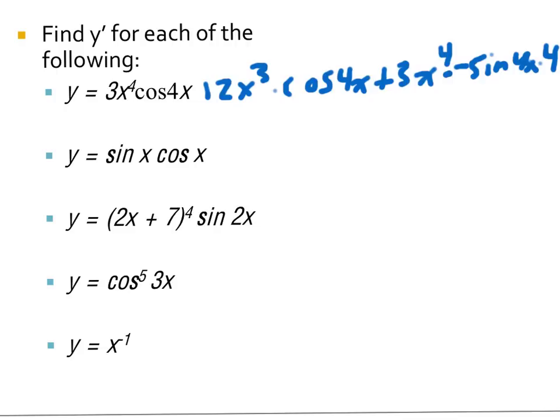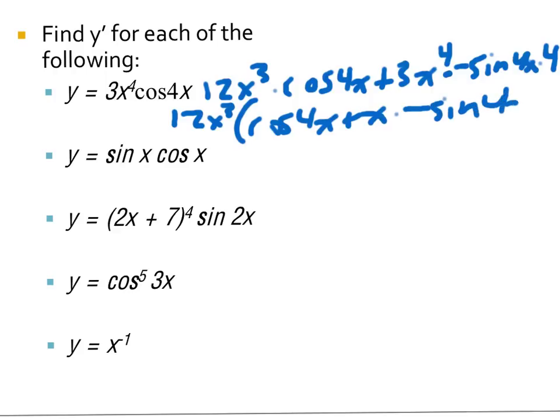I can look for the greatest common factor here. I can actually factor 12 out of both terms, because I have 3 times 4 in the right-hand term, which equals 12. So I factor a 12x cubed out of both terms, which leaves in the first term cosine 4x, plus x times negative sine of 4x.